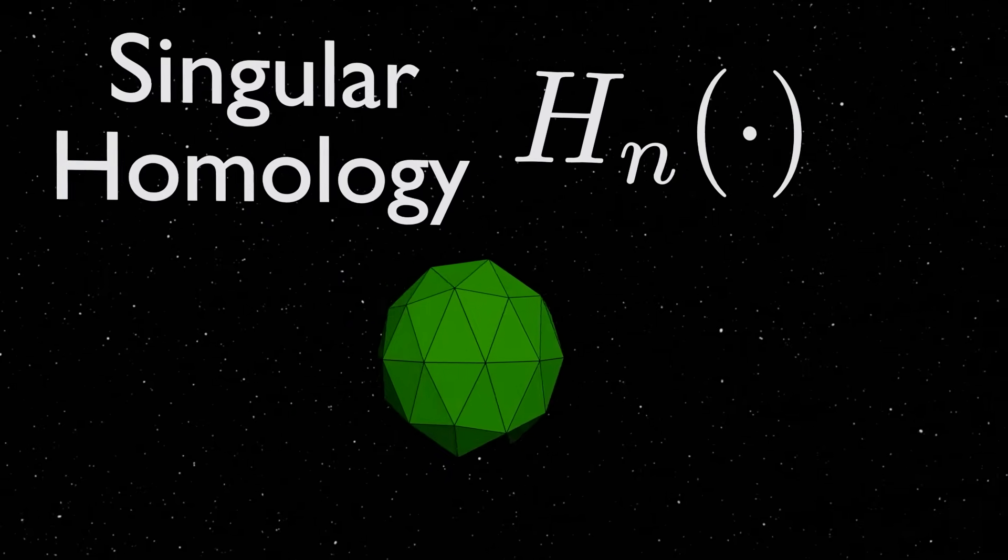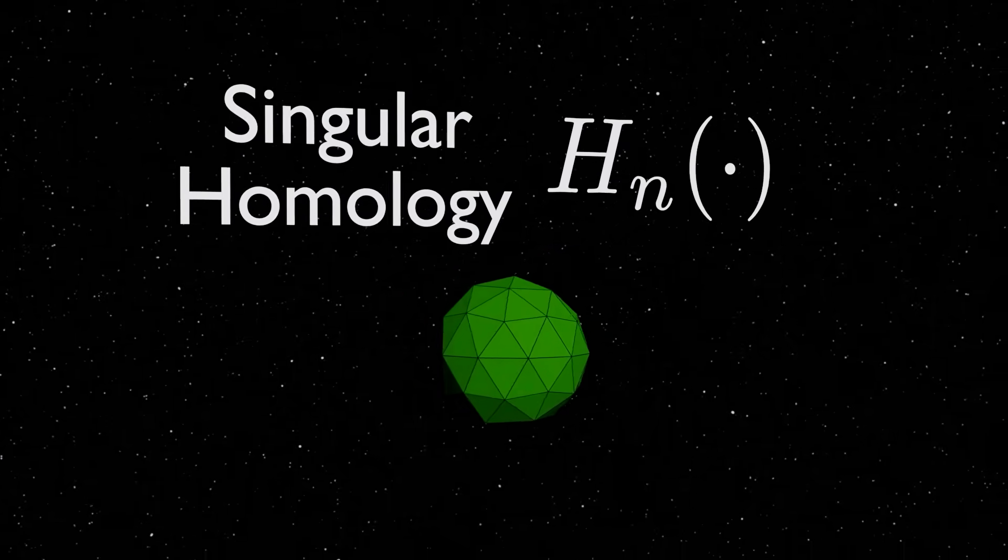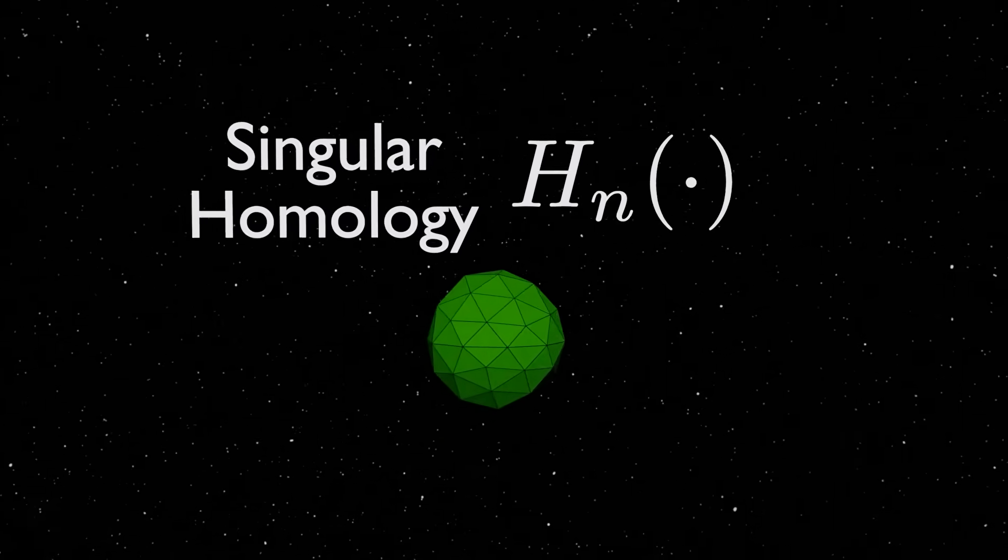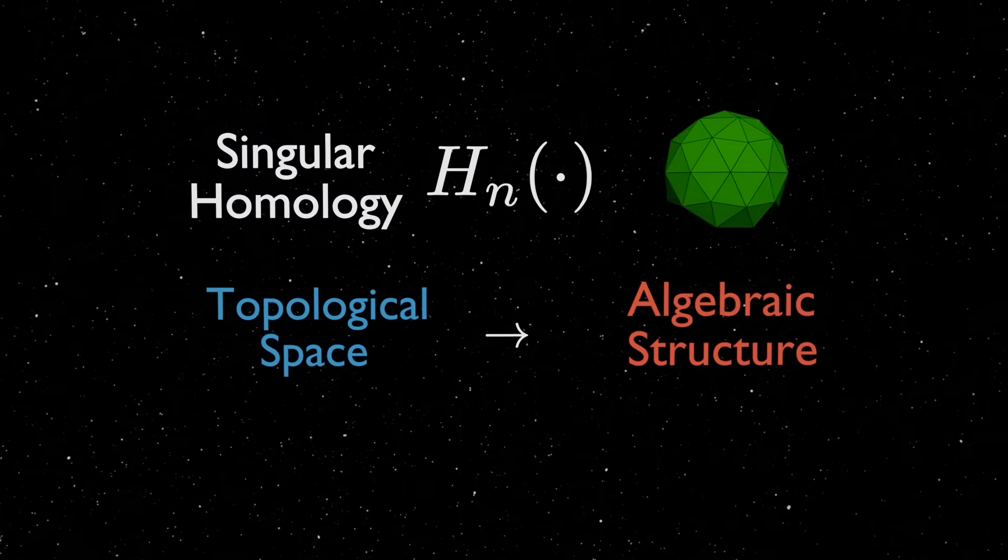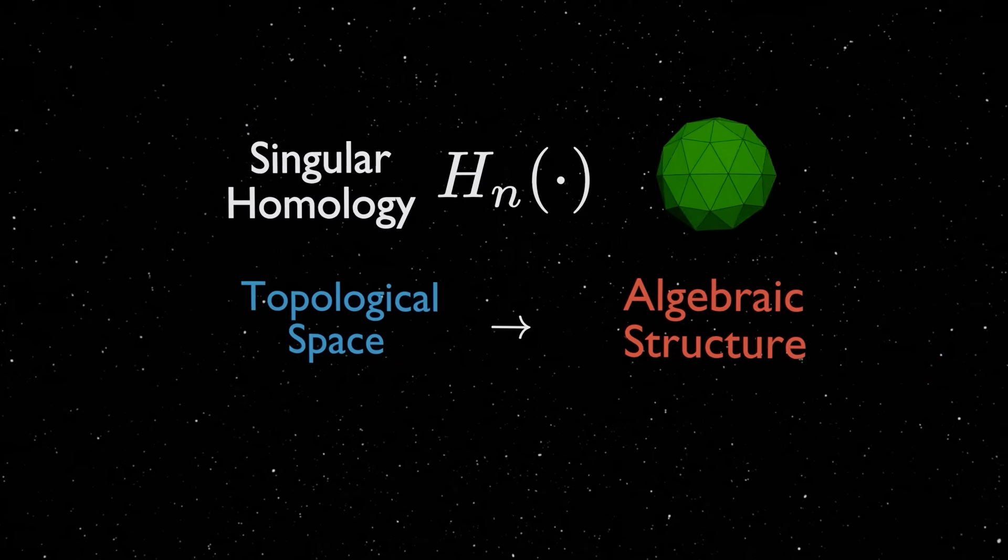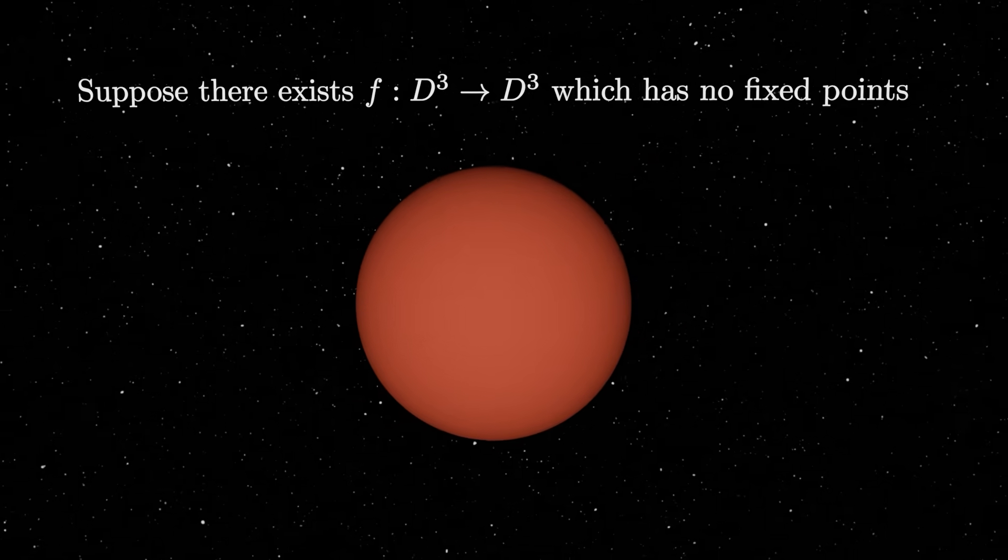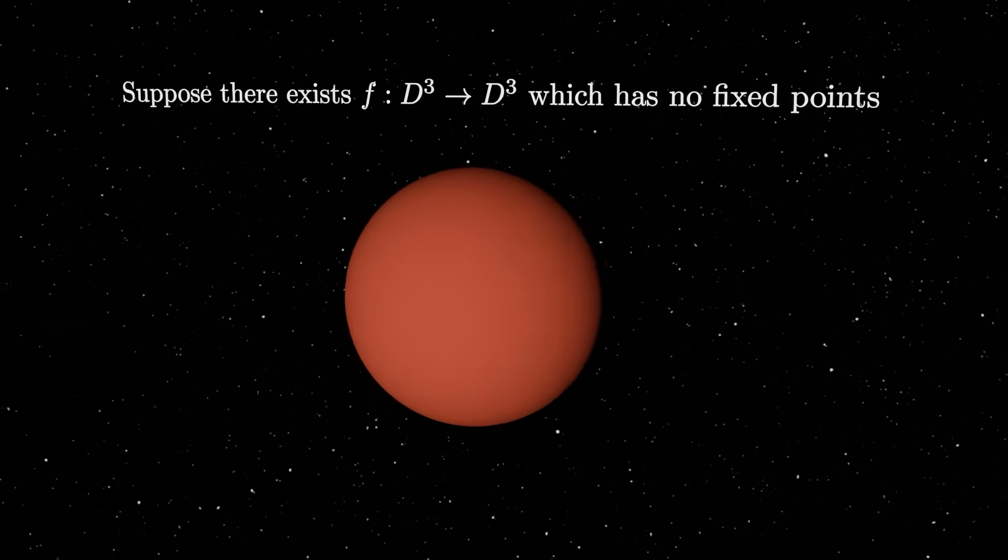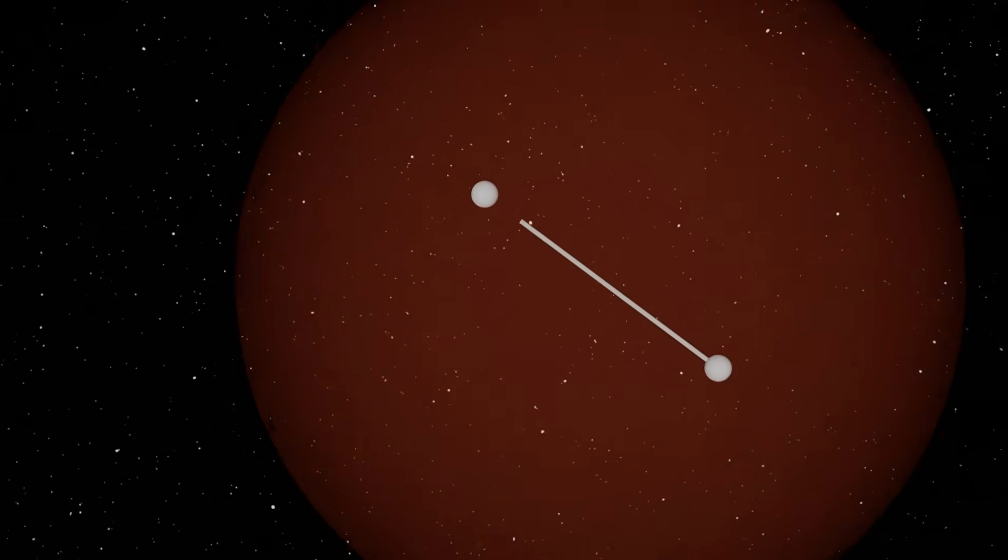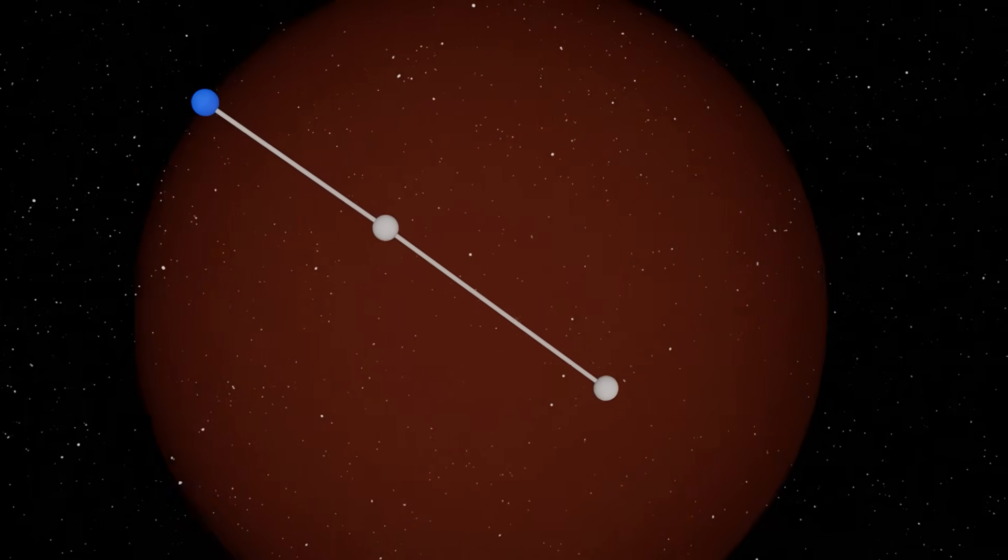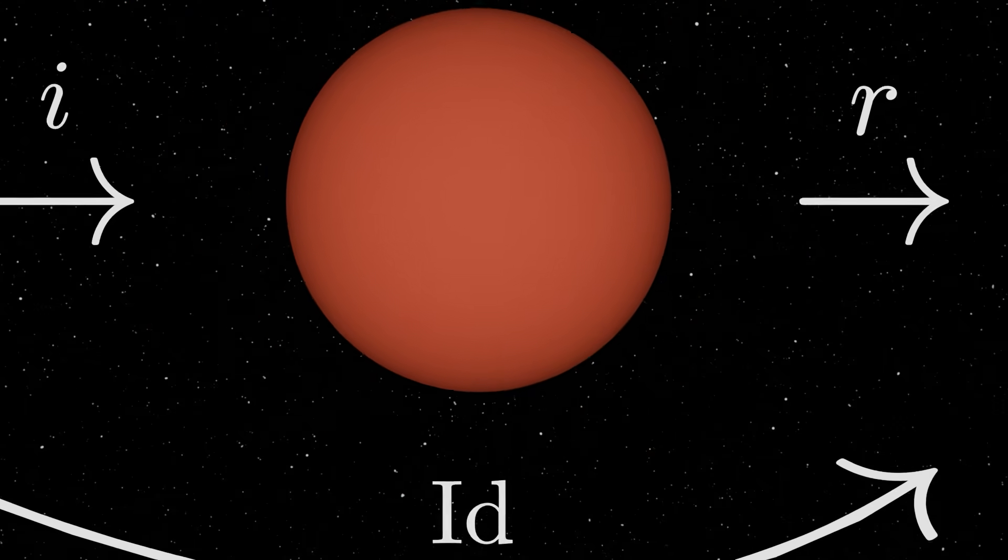But actually, we don't really need to even know how the singular homology is constructed to understand this proof. All that is really important for us to know is that the singular homology assigns an algebraic object to a topological space, just like with the fundamental group. So we proceed like before, assuming that there is a map which has no fixed points, and then trying to find the contradiction. We again create a function R, which draws the ray from f to x and returns to the point of intersection on the boundary. Composing this with the inclusion like before, we get a very similar diagram like last time.